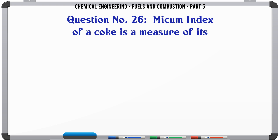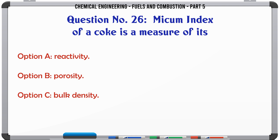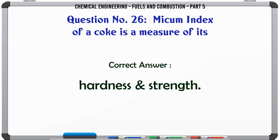Micum index of a coke is a measure of its: A. Reactivity. B. Porosity. C. Bulk density. D. Hardness and strength. The correct answer is hardness and strength.